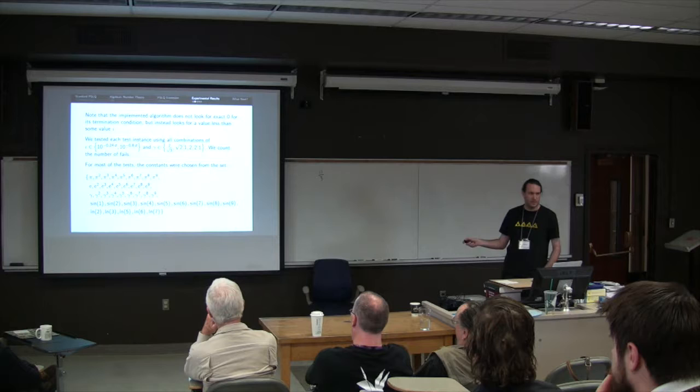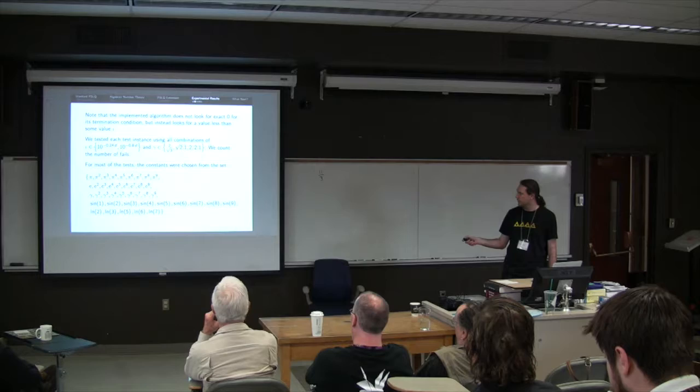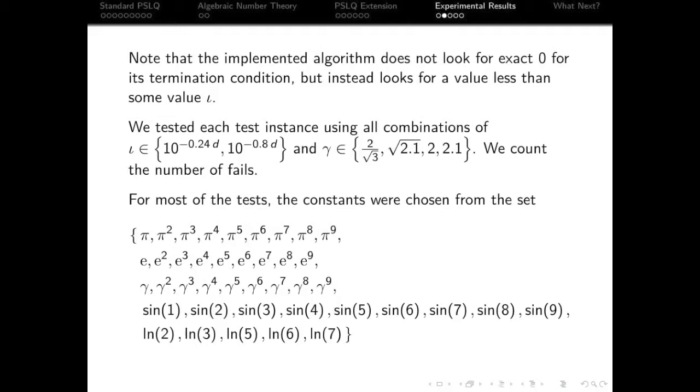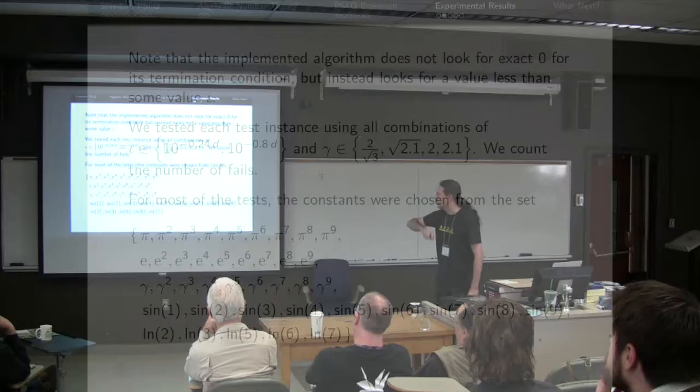I've used a whole bunch of cases. Different thresholds for determining zero. Whether a number's less than 10 to the 0.24 or D where D's the precision to which I calculated the numbers, or 0.8 D and these gammas for varying reasons. And these were the constants I picked from. The astute amongst you may actually notice that there's a problem in that set, but I'm not going to say what that is yet.